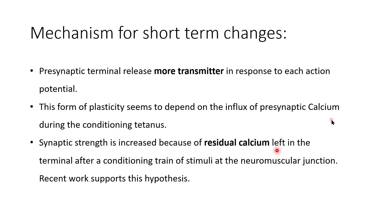What are the mechanisms for short-term changes? The most important and significant mechanism for short-term synaptic strength change is the pre-synaptic terminal releasing more neurotransmitter in response to each action potential. This form of plasticity seems to depend on the influx of pre-synaptic calcium during the conditioning tetanus. Synaptic strength is increased because of the residual calcium left in the terminal after a conditioning train of stimuli at the neuromuscular junction, and recent work also supports this hypothesis.